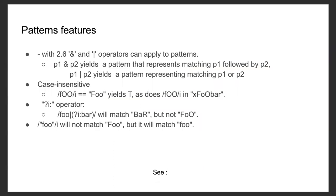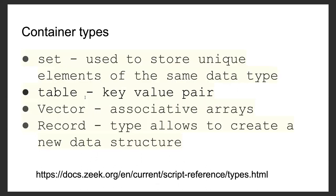The pattern from Zeek 2.6 onwards has new features like case insensitivity. There was a problem where if you needed to match the word 'password,' you had to worry about uppercase and lowercase, and use slash-i for that purpose. But let's go into more interesting stuff. There are container types — set, table, vectors, and records — which allow you to create new data structures. If you have any questions, just let me know or interrupt me.